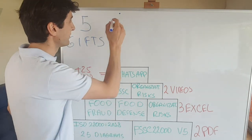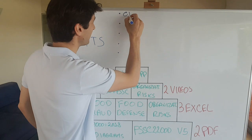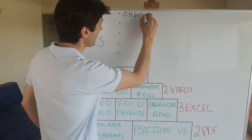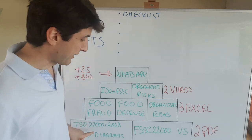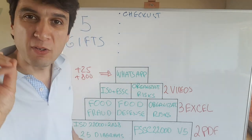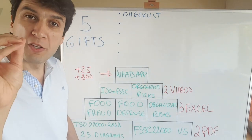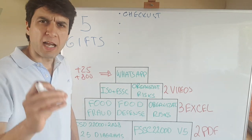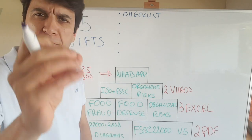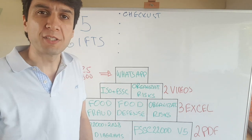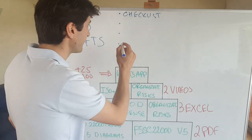First gift: a checklist from ISO and FSSC — the new version — so you can use it on your audits, either internally within your organization or even for auditing a supplier.